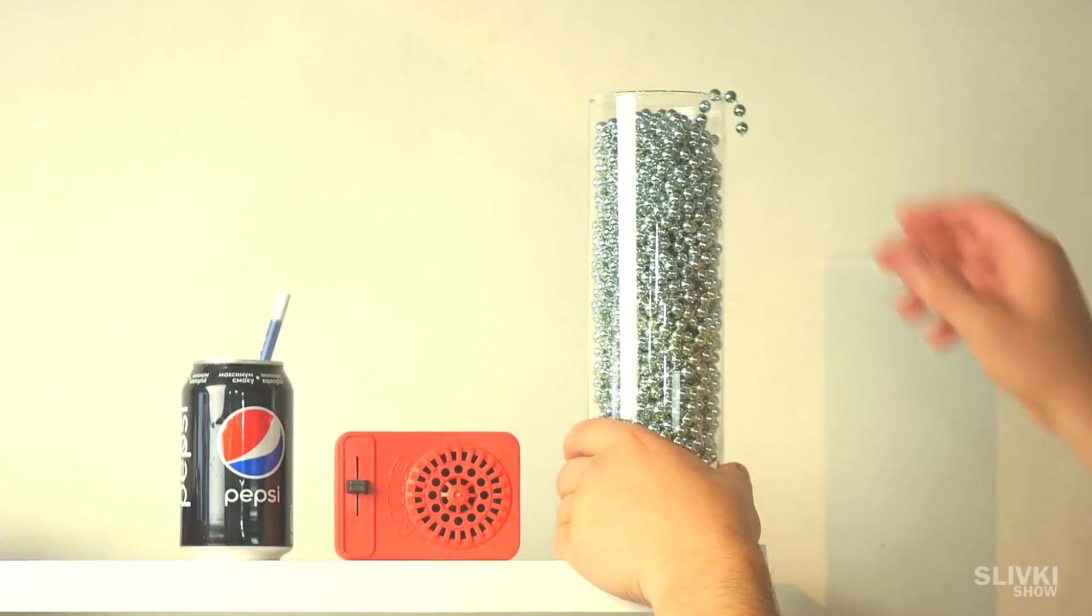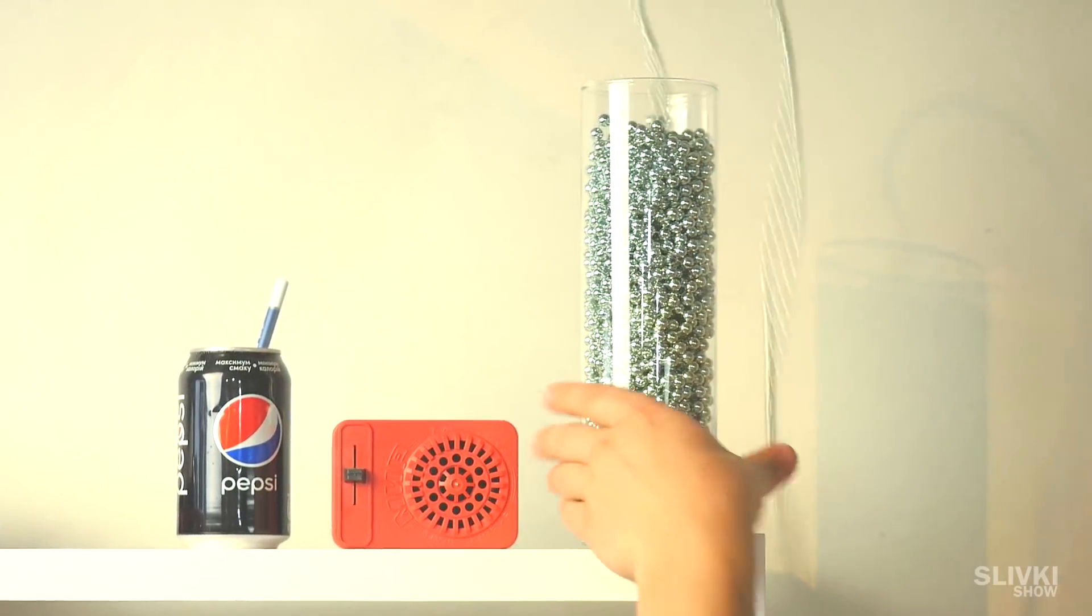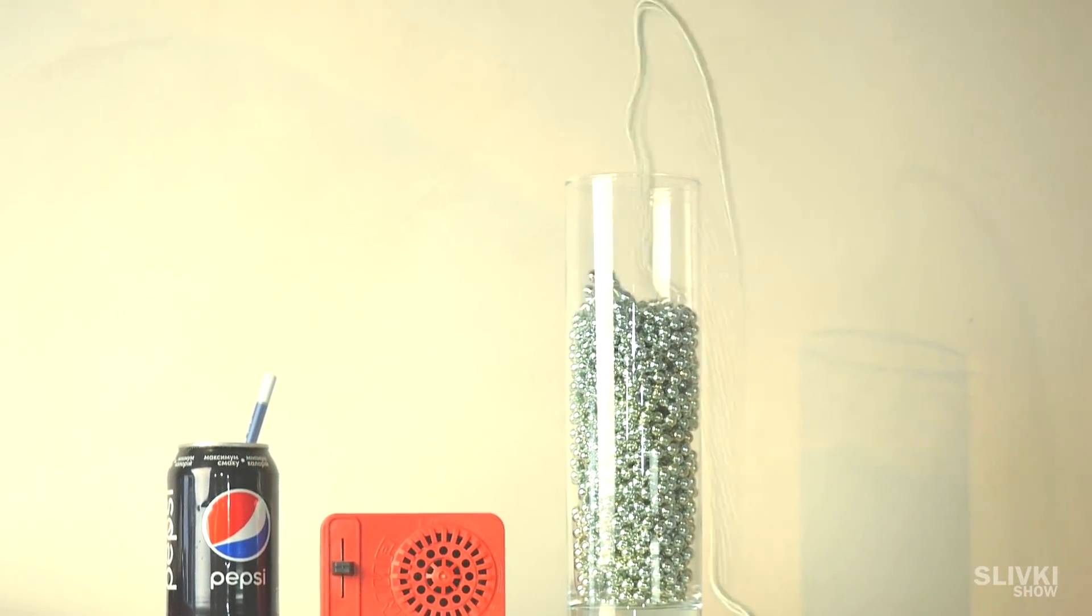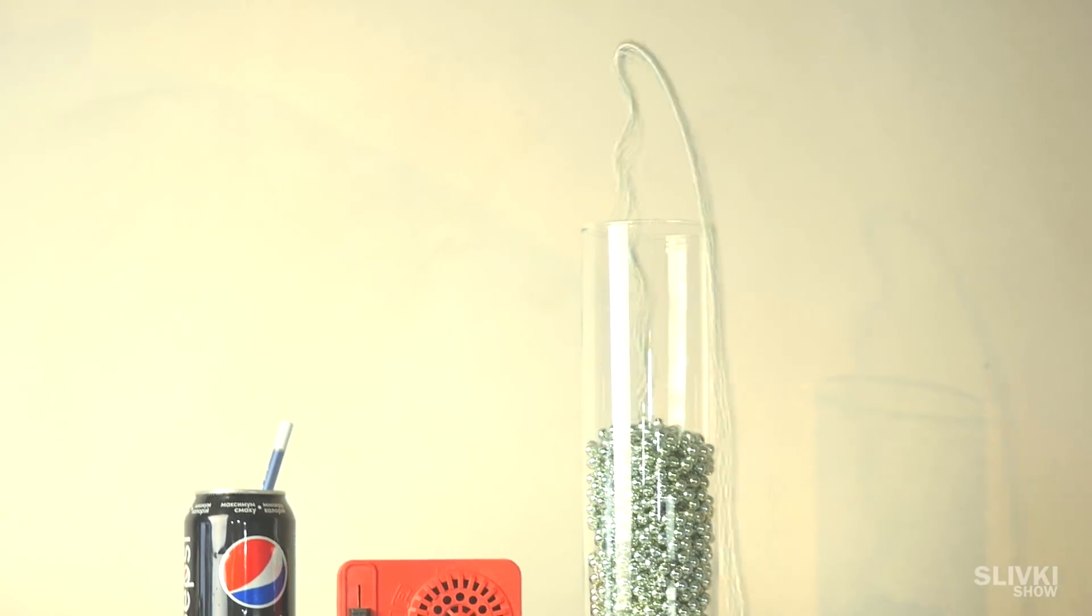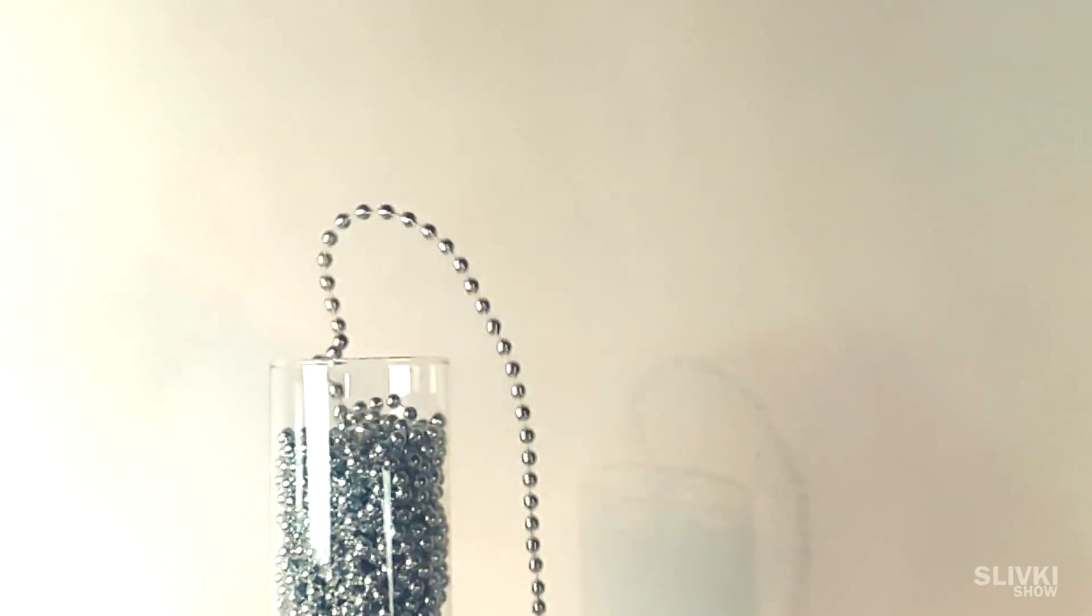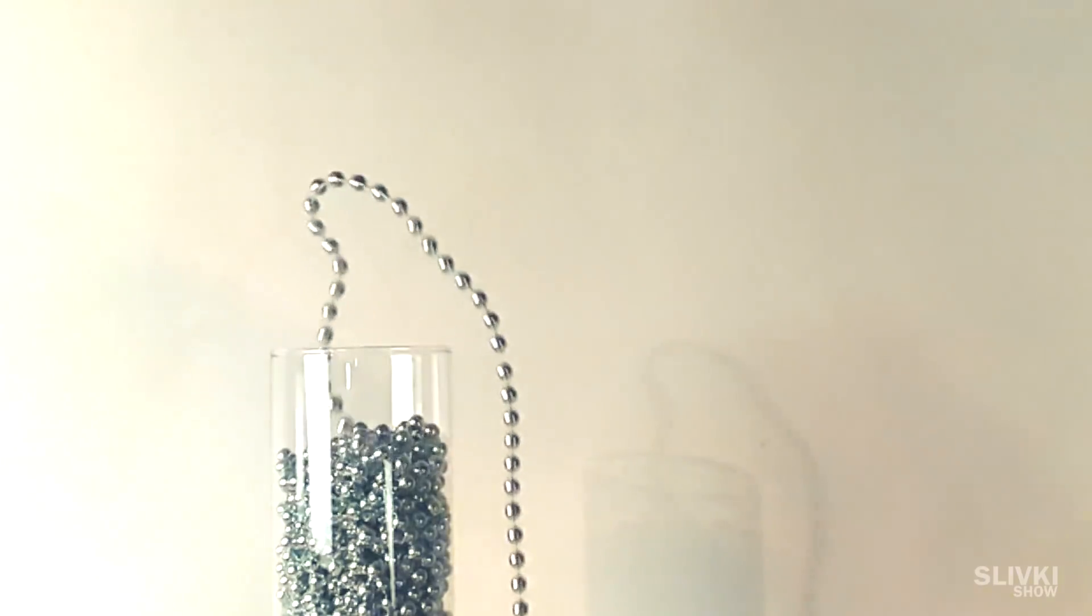The chain is not only moving very fast, but also for some reason rises above the vase itself, demonstrating something unreal. Write in the comments below if you know why it happens.